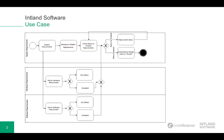The use case starts with the system requirements, since processes are represented by work items in Codebeamer. From the system requirement, which will be the mother requirement, you can derive different and multiple items like hardware and software requirements, which will be the children requirements. For the status transition of the system requirement you can define a trigger or condition which has to be true to operate, for instance from the status waiting for children requirements to the status accepted — but this shall only be possible once the children requirements are completed.